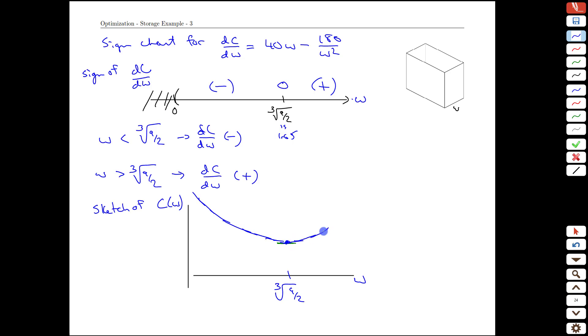The fact that we had this single critical point decreasing everywhere in the domain up to there and increasing on the domain everywhere after there means that w equals cube root of 9 halves is going to be a global min for the cost. Perfect. That gives us the rationale.